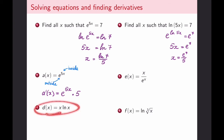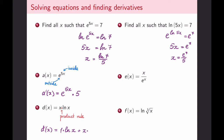For x times ln(x), there is a multiplication involved, which means we apply the product rule. The derivative of the first function x is 1, multiplied by the second ln(x), plus the first function x times the derivative of ln(x), which is 1/x. So I get ln(x) + x·(1/x). The two x's in the second term cancel and I simply get 1. My most simplified solution is ln(x) + 1.